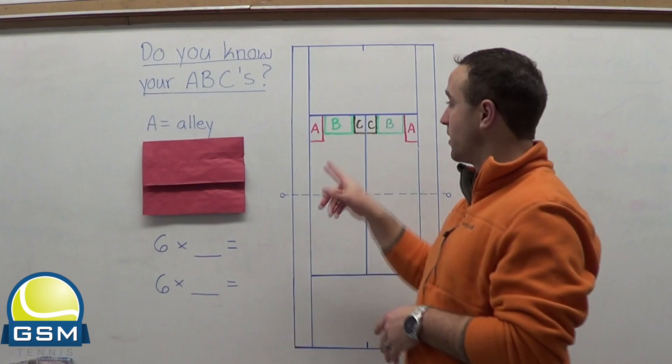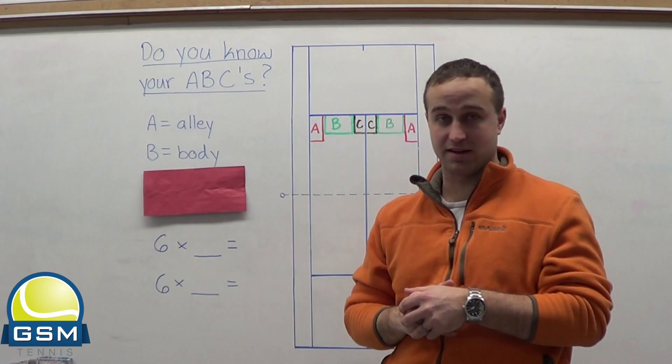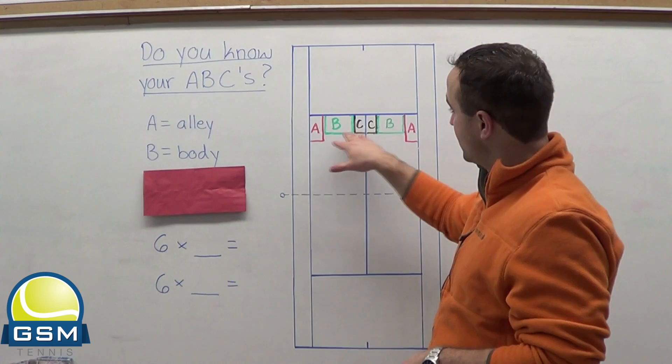The second one, you can kind of look at it. It starts with B, and that is body. B stands for body, and that is the other type of serve that you need to be able to hit. So we have alley and body. Body is right in the middle of the service box.